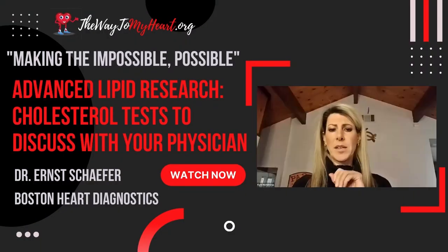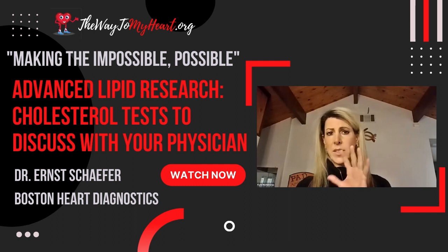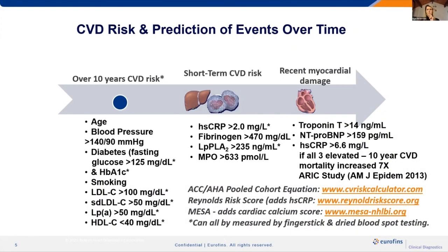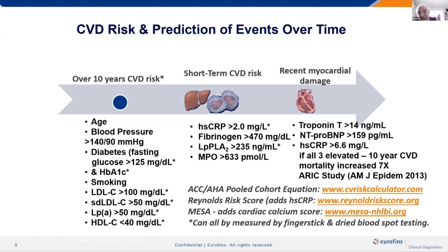The markers on the left your doctor can get from almost any lab — labs in São Paulo and major labs worldwide measure these. Some doctors think you can just calculate LDL, but we published from Framingham that measuring LDL directly is better. You can get small dense LDL now from all major labs like Quest or LabCorp, along with lipoprotein A and HDL. And if you treat the risk factors on the left, you will have beneficial effects on the markers on the right.